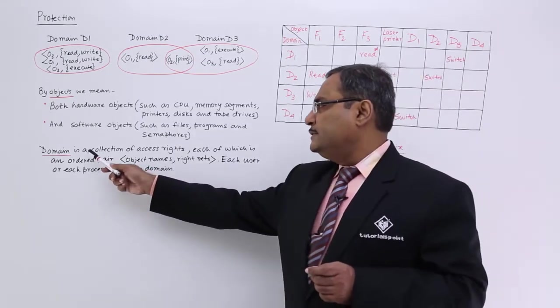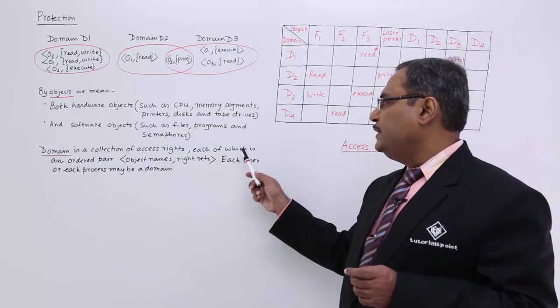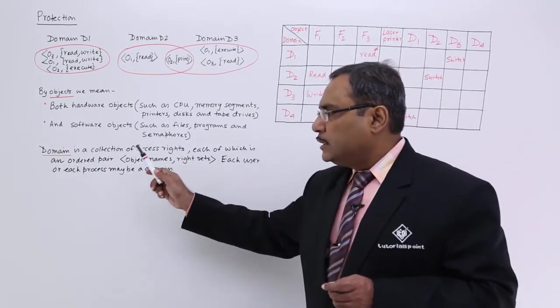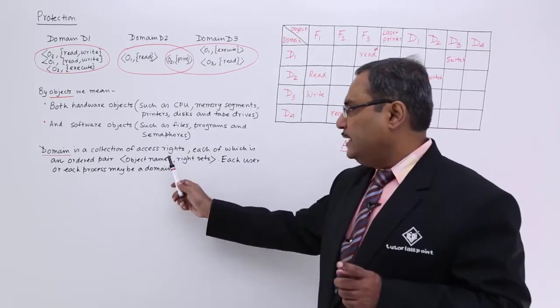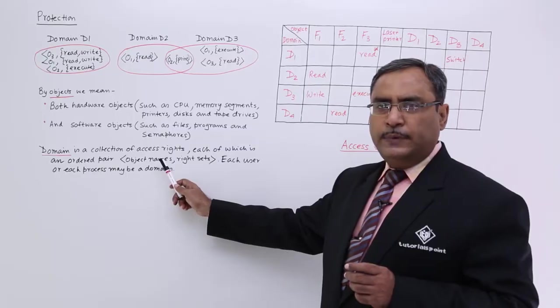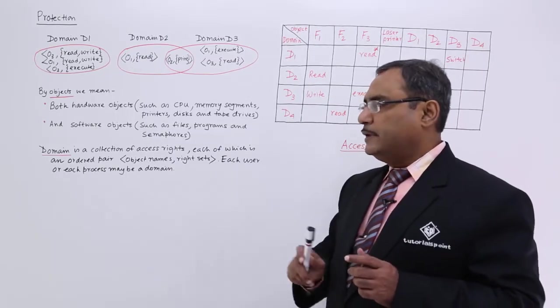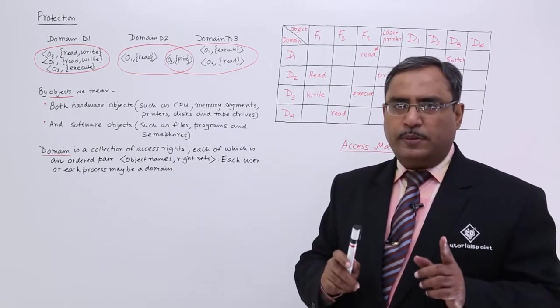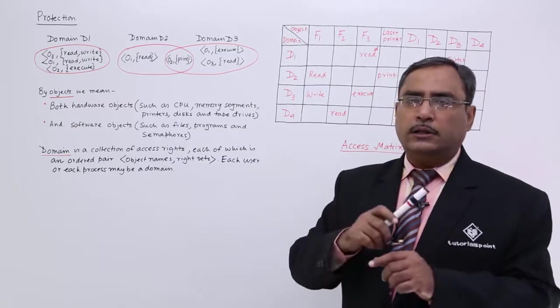So, domain is a collection of access rights each of which is an ordered pair. Ordered pair means this sequence has to be maintained. At first, object names will be coming, then write sets will be coming. So, the ordered pair means this ordering has to be maintained. You cannot write on the other way.